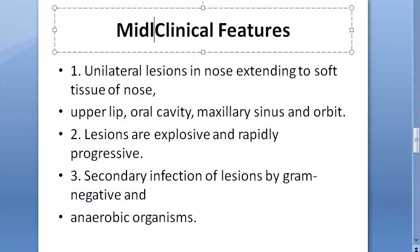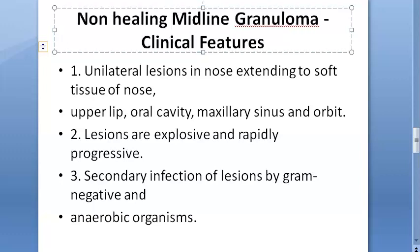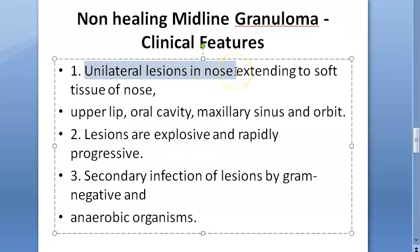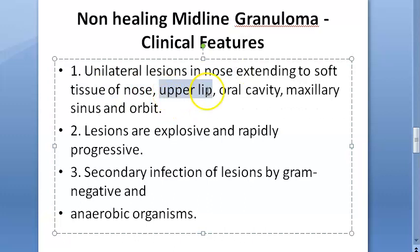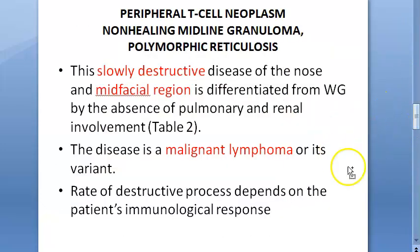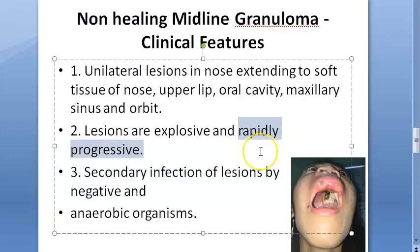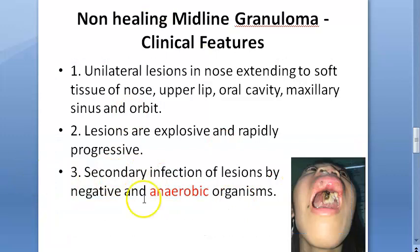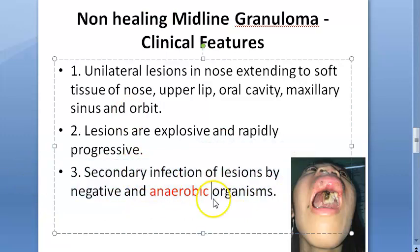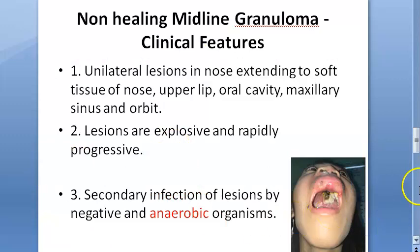Clinical features of non-healing midline granuloma: there are unilateral lesions in the nose extending to the soft tissue of the nose, upper lip, oral cavity, maxillary sinus, and orbit — which matches the clinical photo shown. Lesions are explosive and rapidly progressive. Secondary infection of lesions by gram-negative and anaerobic organisms can also occur.